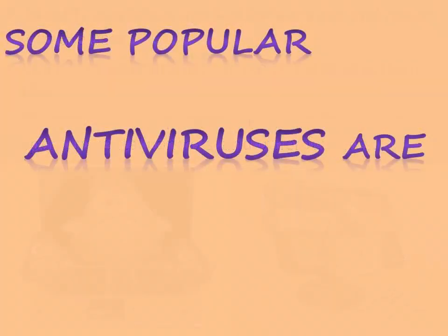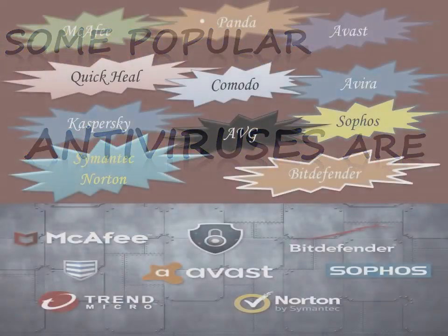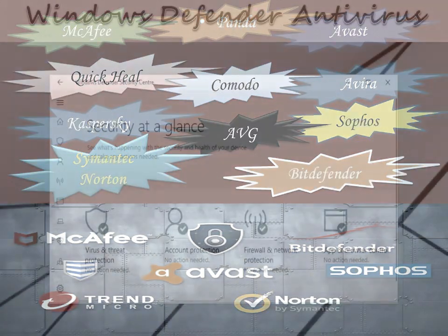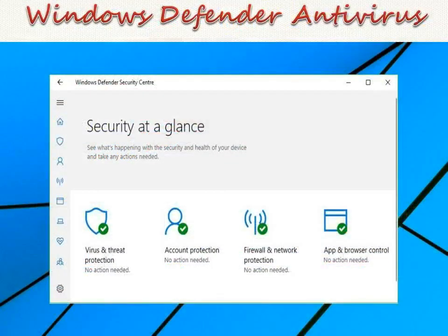Modern antivirus programs may also include anti-spam, parental controls, and other features. There are many antivirus programs available in the market. Some popular brands include McAfee, Quick Heal, AVG, Avast, Symantec, Norton Antivirus, Kaspersky, Avira, Bitdefender, Comodo, Panda, Sophos, and others.